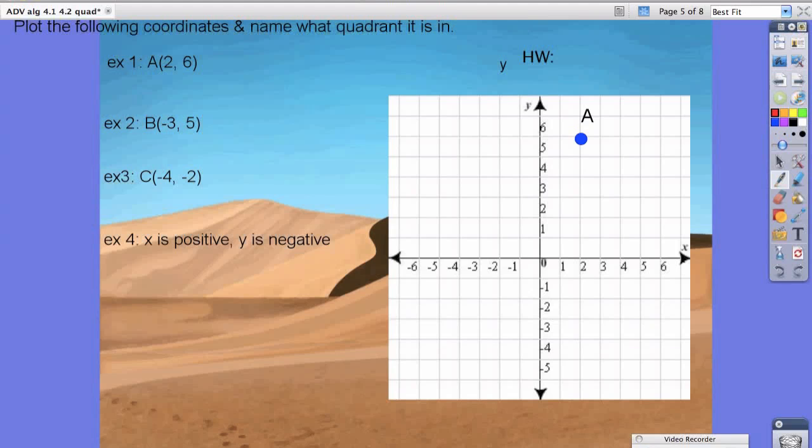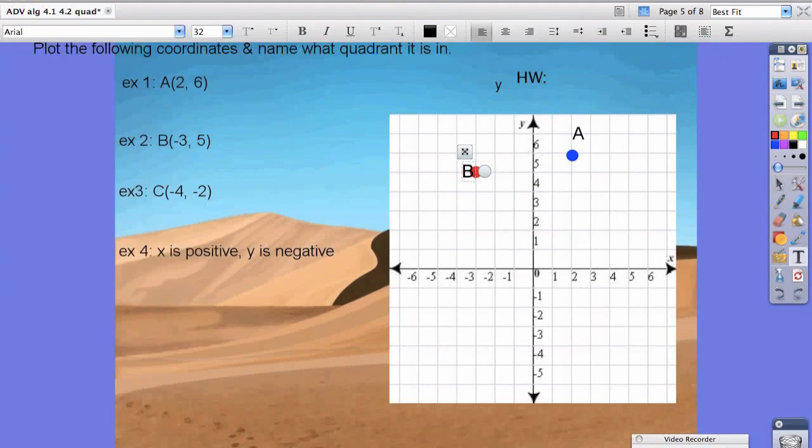Let's try example 2. Start at the origin. Your x value is negative 3, so we move to the left 3. 1, 2, 3. And up 5. 1, 2, 3, 4, and 5. We're going to label this point B because it has a B right next to it.